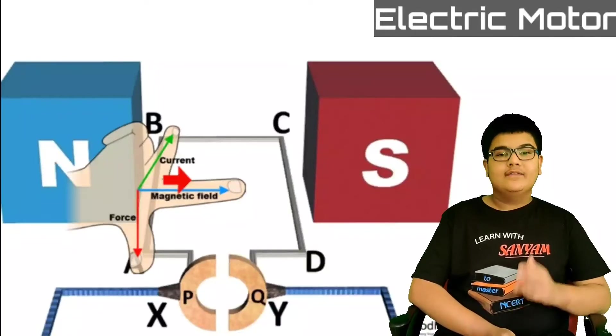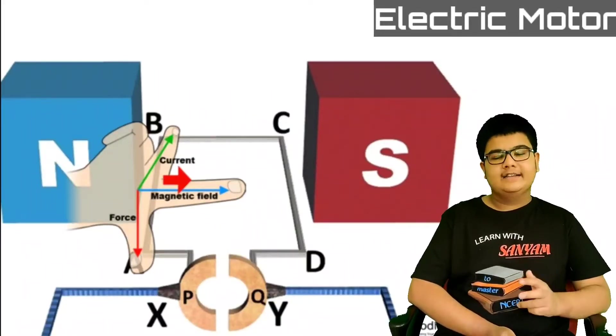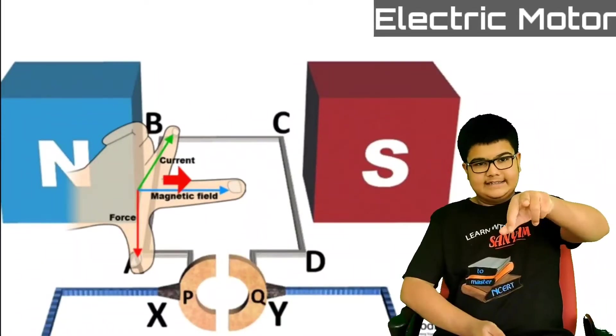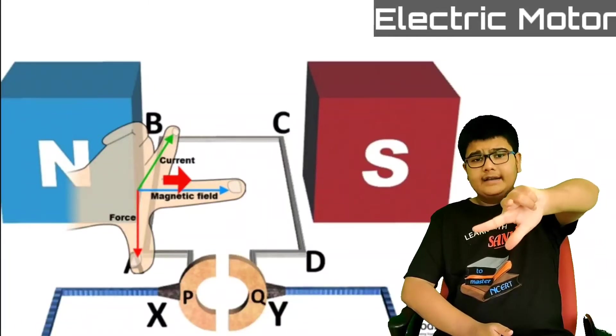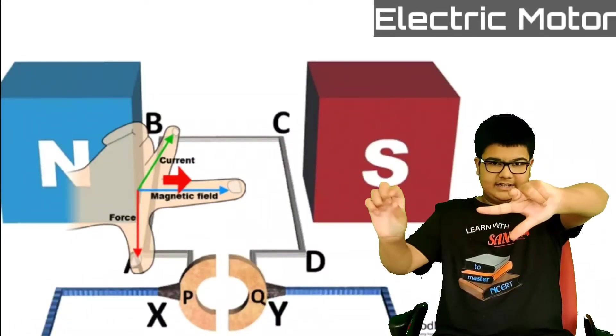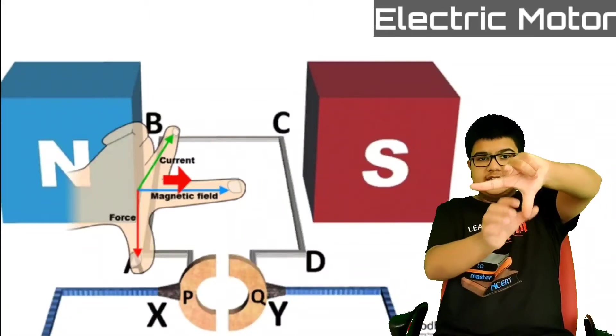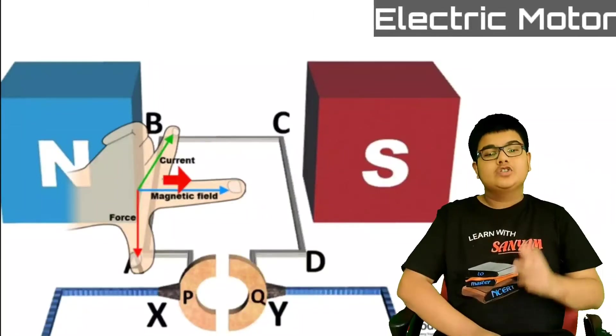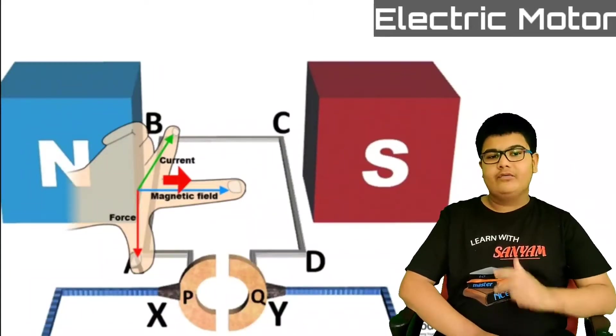Applying Fleming's rule on arm AB, we get that current is acting in this direction. Our magnetic field is in this direction. So the force is acting downwards. On arm AB, the force acts downwards.